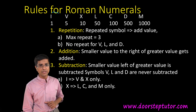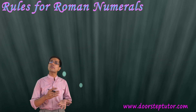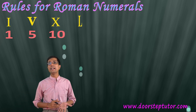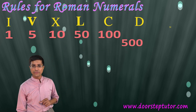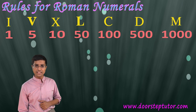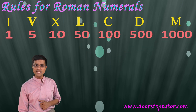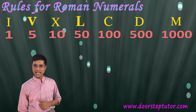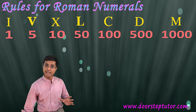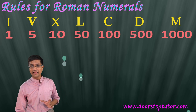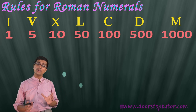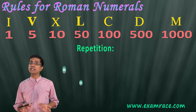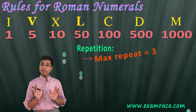Roman numerals don't have symbols for every number like 2, 3, etc. — they don't have all the symbols we find in the decimal system. They have specific symbols: I for 1, V for 5, X for 10, L for 50, C for 100, D for 500, and M for 1000.